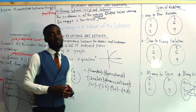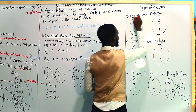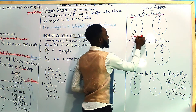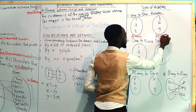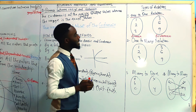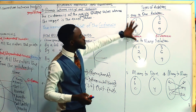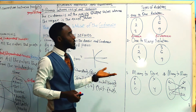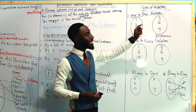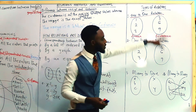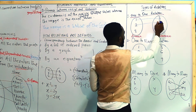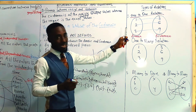Now let's talk about the various types of relations. The first is a one-to-one relation. We have the domain — the independent value — and the co-domain — the dependent value. Say we have 1, 2, 3 in the domain and 3, 6, 9 in the co-domain. In a one-to-one relation, one value from the domain maps directly to one and only one value in the co-domain. So 1 maps to 3, 2 maps to 6, and 3 maps to 9.